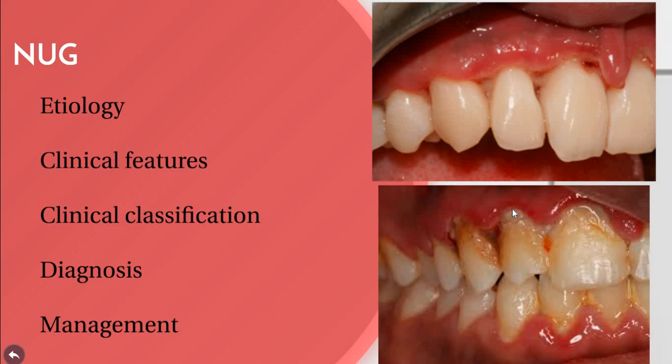Clinical diagnosis is based on punched-out ulceration of the gingiva along with the systemic features discussed. Management includes removal of the pseudomembrane: the involved area is isolated with cotton rolls and dried, topical anesthesia is applied, and after two to three minutes the area is gently swept with a cotton pellet to remove the pseudomembrane. After cleansing with warm water, superficial calculus is removed.